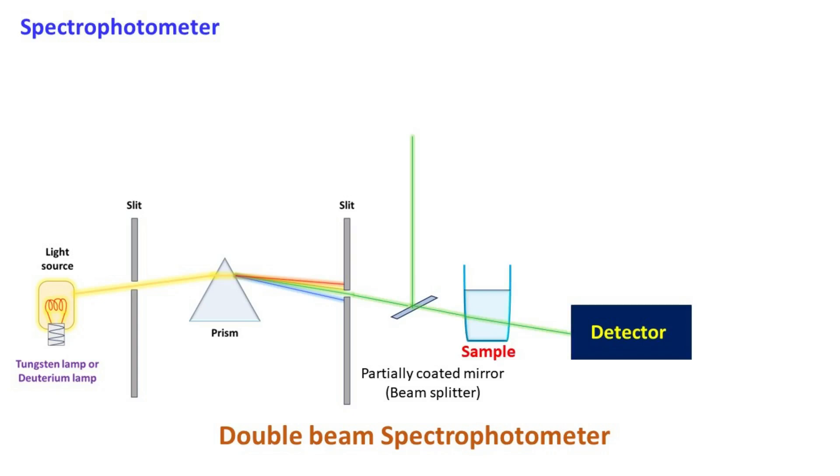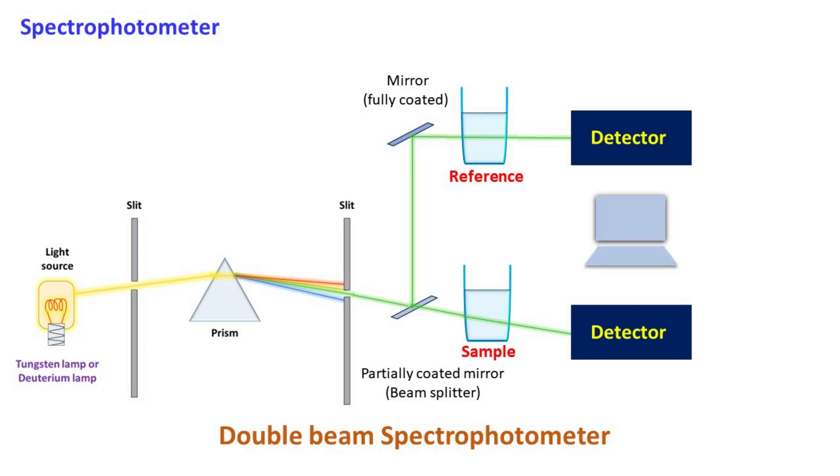One beam is allowed to enter the sample cell while the other beam is further reflected by the mirror and allowed to enter the reference cell. The reference cell generally holds the control or blank solution. The light coming out from the sample cell and the reference cell is detected by the detector and analyzed by computer.